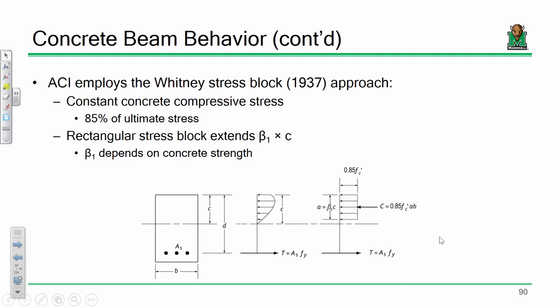The reason for these beta1 values is that as concrete gets stronger, it also gets less ductile. So when fc' goes up, ductility goes down, and beta1 accounts for that. Don't worry — we'll delve into this in significant detail later. Is everybody okay with this so far?